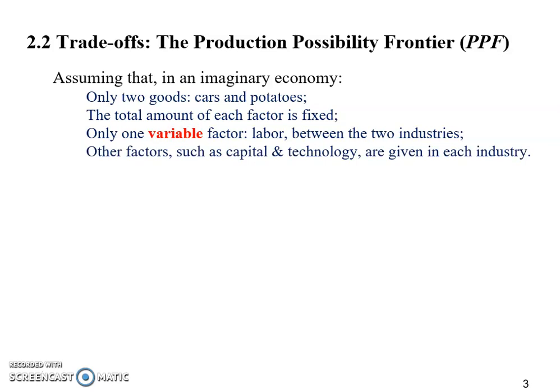The last assumption is that other factors such as capital and technology are given in each industry. Because we said only labor is variable — meaning it can be changed between the two industries — that means the other factors cannot be changed, even at the industry level.